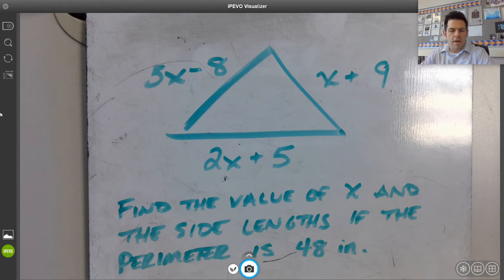Mr. Berry here. We're talking about equations, and in this scenario, looking at multiple-step equations. We have ourselves a picture here. It's a triangle, and the triangle has three sides with expressions there.